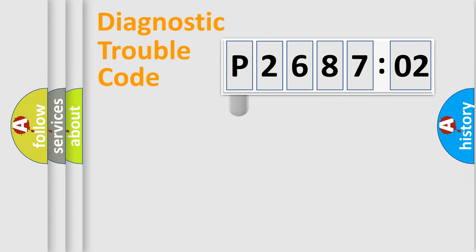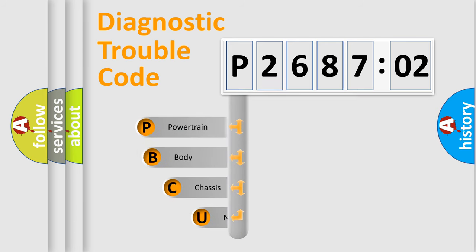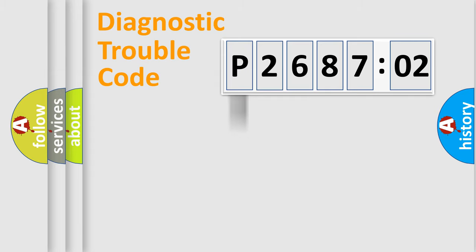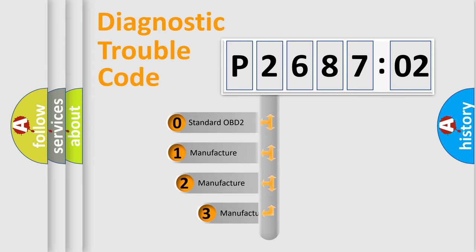First, let's look at the history of diagnostic fault code composition according to the OBD2 protocol, which is unified for all automakers since 2000. We divide the electric system of an automobile into four basic units: Powertrain, Body, Chassis, and Network. This distribution is defined in the first character of the code.